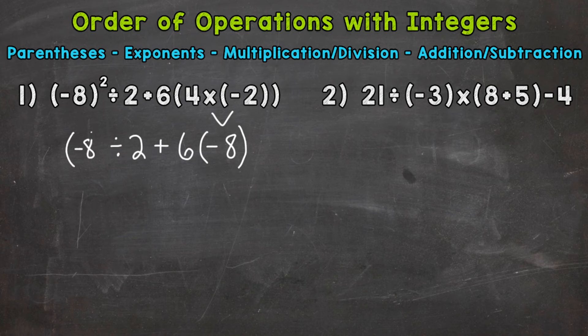We will continue to go through our process. Any parentheses where we have to solve something? No. Any exponents? Yes — we have negative 8 squared. That does not mean negative 8 times 2; it means negative 8 times negative 8. A negative times a negative equals a positive, so we get 64.